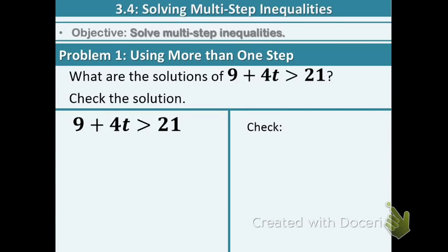Let's begin with example 1. Multi-step means we're going to be using more than one step, so at least two steps involved. The first thing we want to do in this inequality, 9 plus 4t greater than 21, is subtract the 9.